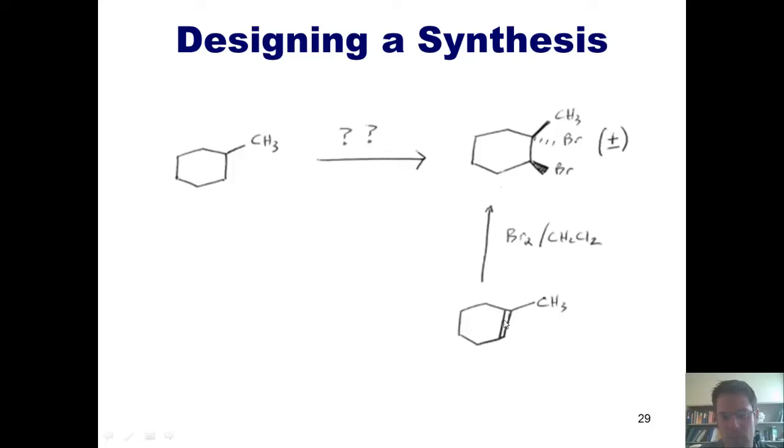How in the world could I make this product from some imaginary starting material? Well, you can imagine that if I had a double bond right here and treated it with bromine and a non-water solvent, I would indeed form this product, placing the two bromines anti to each other and giving me a racemic mixture at both stereocenters. This reaction seems like it could work.